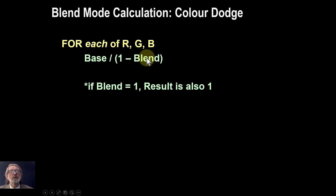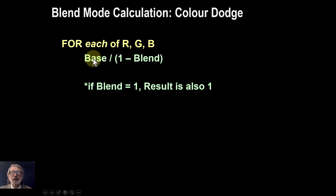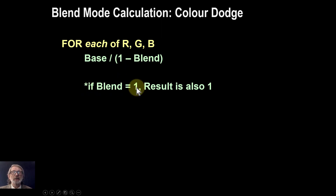If the blend layer is equal to 1 — the maximum — you get 1 minus 1 which is 0. So you get the base layer divided by 0, and if you divide by 0 you get infinity. Computers have a problem with this, so there's a little fudge: if it's 1, we just make sure the result we get is also 1.